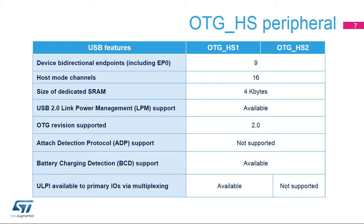This is an overview of the peripheral's characteristics. Up to nine channels, including endpoint zero, can be used for device implementation, which can be useful for creating more complex composite devices. On the host side, up to 16 channels can be used in parallel.